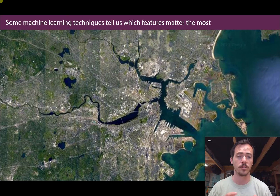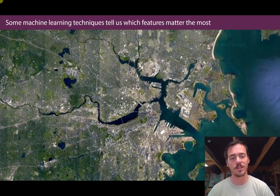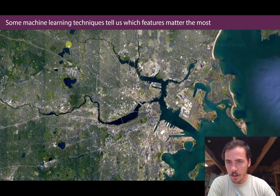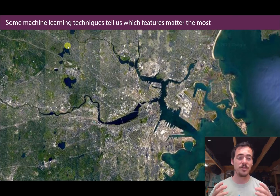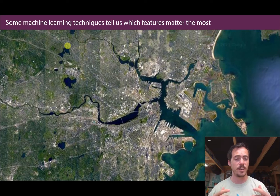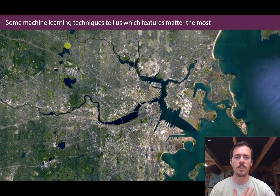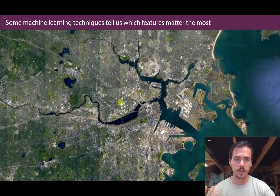Interpretability is really important for material science. Not all algorithms tell you which features are the most important, but some do. For example, there's actually become a really famous dataset in the data science world of housing prices in Boston. They give you a bunch of features — things like crime rate, square footage, number of rooms, and so on — and you could use those features to try and predict housing prices based on neighborhood and location.